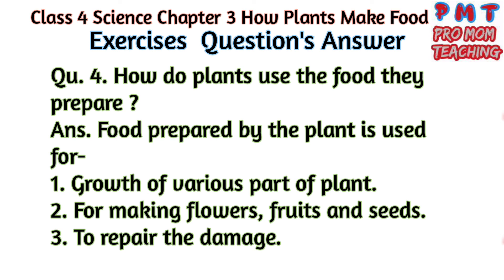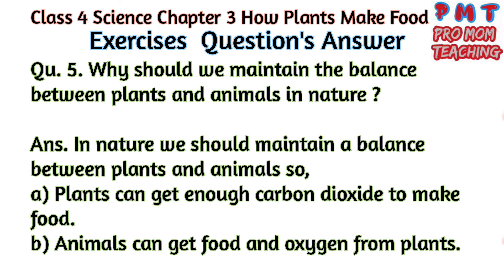Third, food is used to repair damage. Question 5: Why should we maintain the balance between plants and animals in nature? Answer: In nature, we should maintain a balance between plants and animals so that, first, plants can get enough carbon dioxide to make food, and second, animals can get food and oxygen from plants. Thank you.